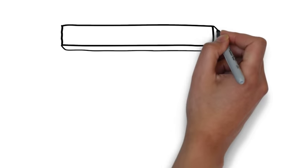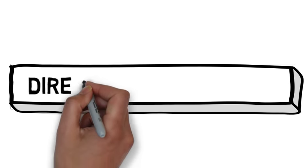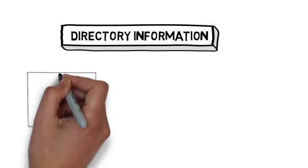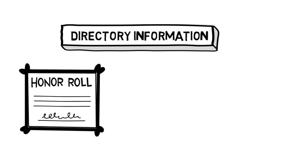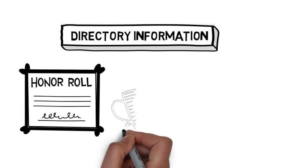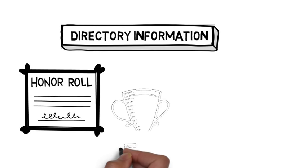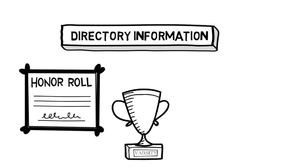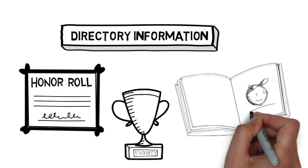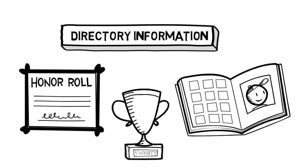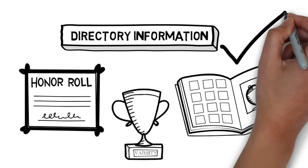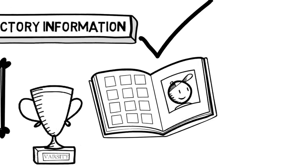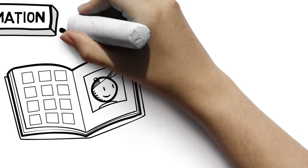Students don't attend school anonymously, so schools routinely share some basic information about students called directory information. If a school is going to share directory information, it must notify parents and students who are 18 or over, or who attend post-secondary institutions. For example, Patrick's school yearbook contains his name, grade level, and photograph. That's okay, because his school designated these items as directory information and published its policy on its website.